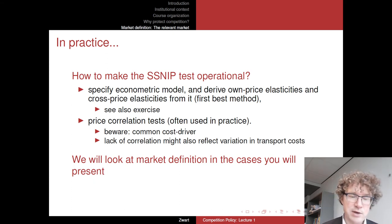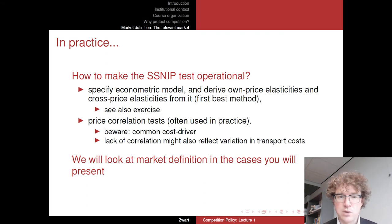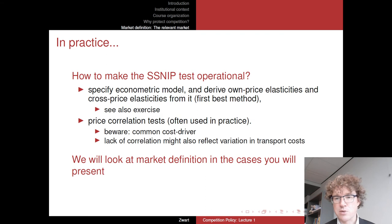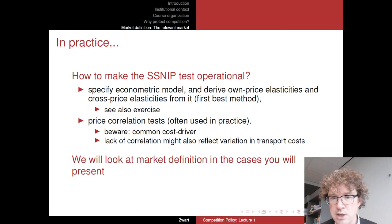On the other hand, a lack of price correlation does not automatically mean there is no competitive interaction between two markets. No correlation might reflect differences in transportation costs: even if two goods affect each other competitively, their prices might move differently if transport costs for those goods move in uncoordinated ways — which would confound the conclusions drawn from simple correlation tests.